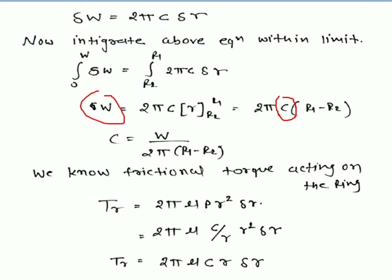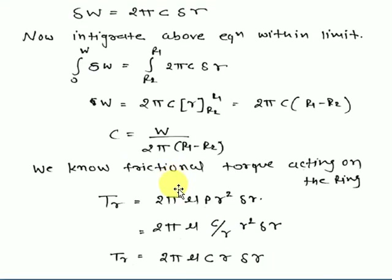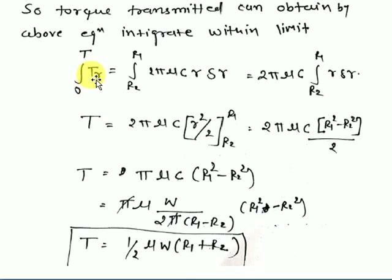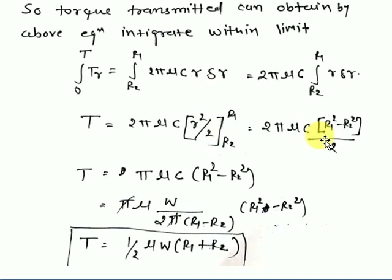For the torque equation under uniform wear theory: the torque integral is ∫ 2πμ·p·r²·dr, substituting p = C/r gives ∫ 2πμ·C·r·dr. Integrating r gives r²/2 with limits r2 to r1: T = 2πμC × (r1² - r2²)/2 = πμC(r1² - r2²).